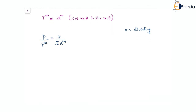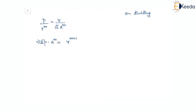This further gives the relation: p times √2 times a^m equal to r to the power of (m + 1). We have now got an equation in p and r, and therefore this is the required pedal equation. The pedal equation is √2 · a^m · p equal to r^(m+1). I hope things are clear here. Thank you.